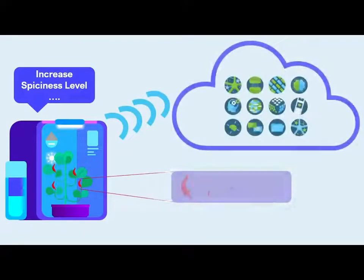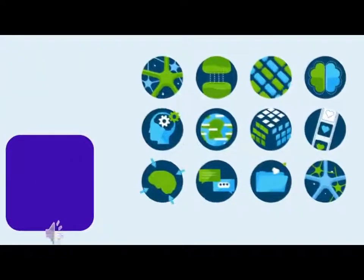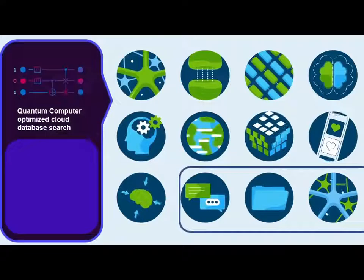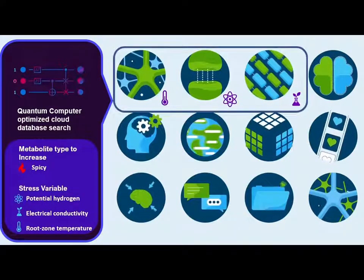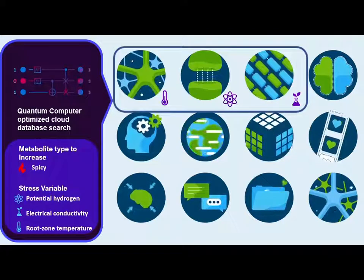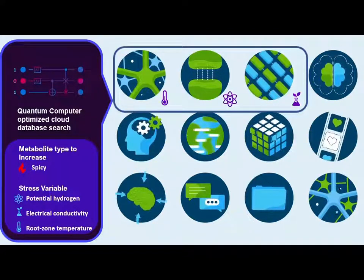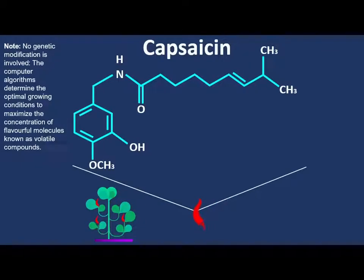For example, if you ask Elysium to produce chilies that have high spiciness levels, it will search the cloud database. In the cloud, digital libraries search the environmental variables required. Quantum computer-optimized cloud database is used to optimize the database search by square root of normal computation time, like the capsaicin content, which is the indicator of how spicy the chili is. No genetic modification is involved.